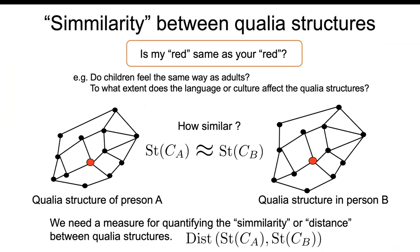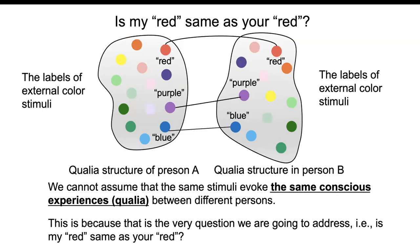The ultimate goal is to address the question: is my red the same as your red? For example, do children feel the same way as adults? To what extent does language or culture affect qualia structure — a topic of today's discussion. To address these questions we need a method, a measure, to quantify how similar two structures are. We have invented such a measure to quantify two different structures.